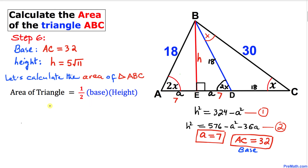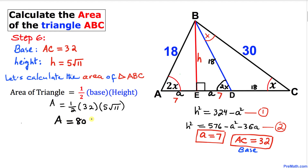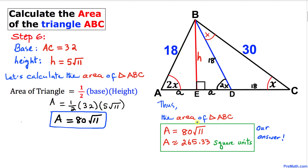Filling in the values: Area = ½ × 32 × 5√11. The area turns out to be 80√11.